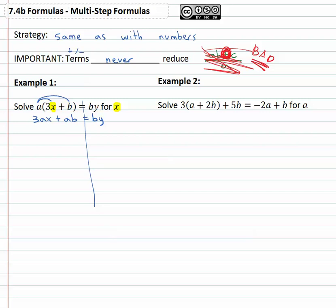Now we're still working to get that x alone and we know we need to get rid of anything that might be added or subtracted to it. We've got a positive ab so we'll subtract ab from both sides. Now we have 3ax equals, be careful, they both have b but they don't have y and they both don't have a, they're not like terms. So we've got by minus ab, they're not like terms, we can't combine them.